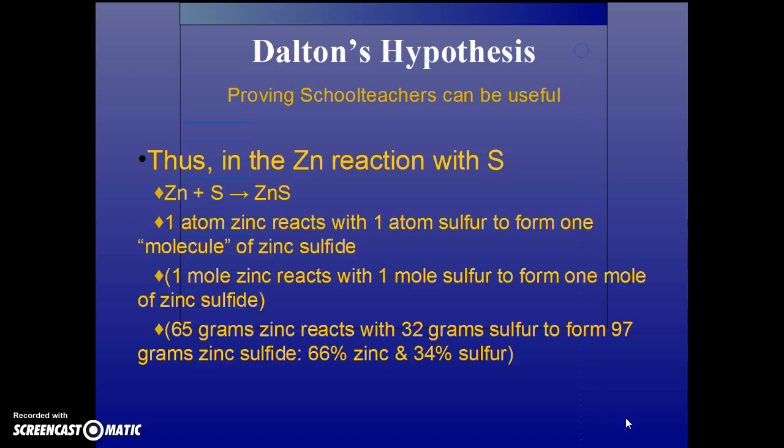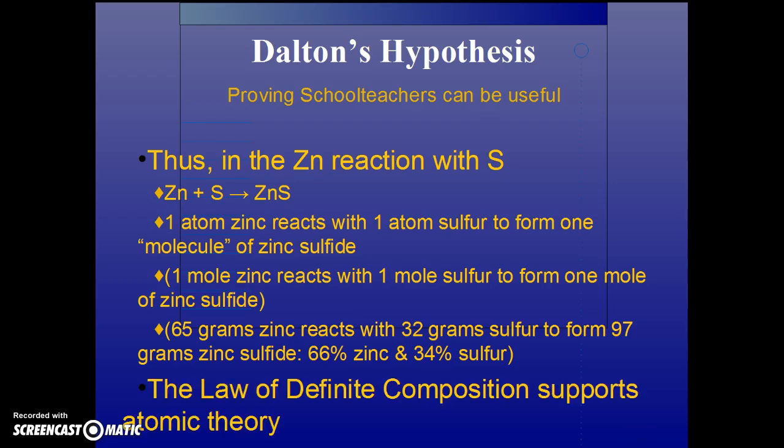In the zinc reaction with sulfur, one atom of zinc reacts with one atom of sulfur to form one molecule of zinc sulfide. If we ramp that up to the gazillion size of atoms, one mole of zinc reacts with one mole of sulfur to form one mole of zinc sulfide. If we look at the periodic table, 65 grams of zinc is one mole, reacting with one mole of sulfur, 32 grams, to form 97 grams of zinc sulfide - 66% zinc and 34% sulfur. The law of definite composition supports atomic theory.